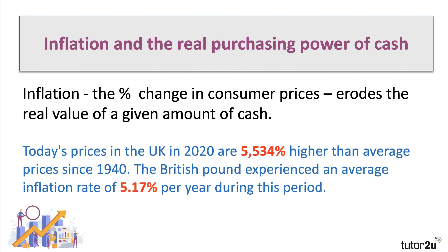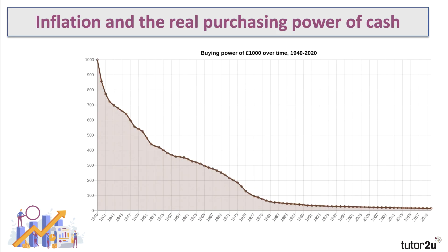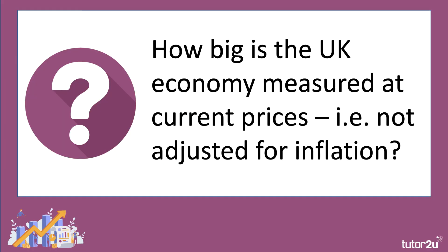According to the data, prices today in the UK in 2020 are over five thousand five hundred percent higher than the average prices that prevailed in 1940. The British pound has actually experienced average inflation of just over five percent between 1940 and 2020. That means the real purchasing power of cash, as you can see from this chart, has fallen quite substantially over time. A thousand pounds in cash in 1940 would have bought you thousands of times more than it does today.